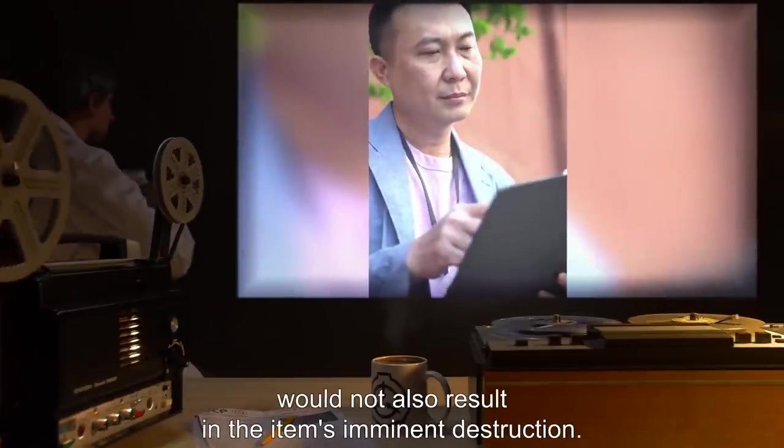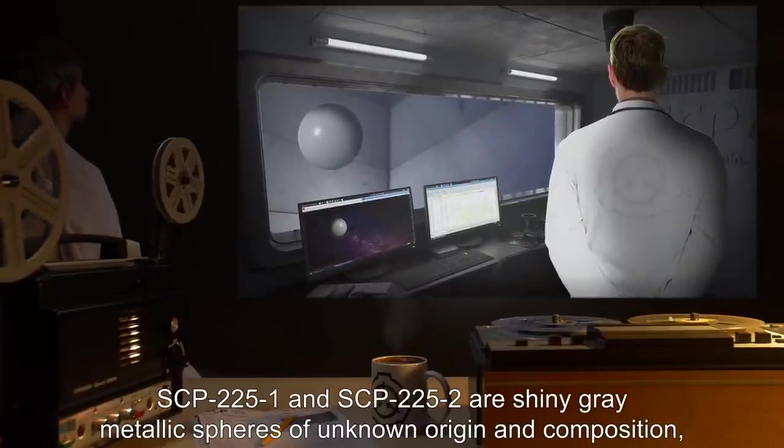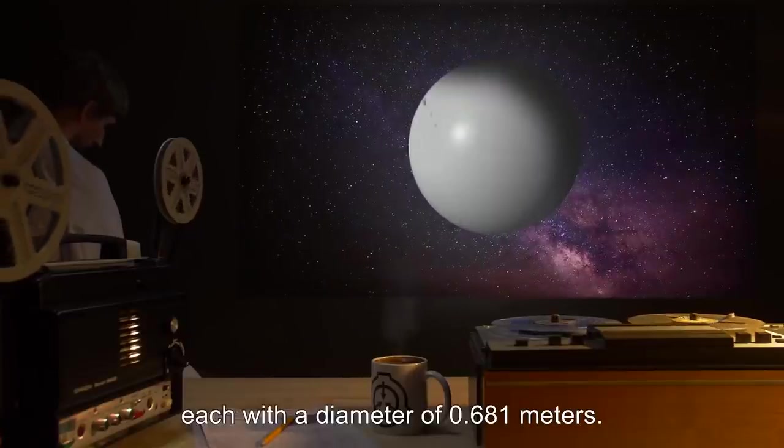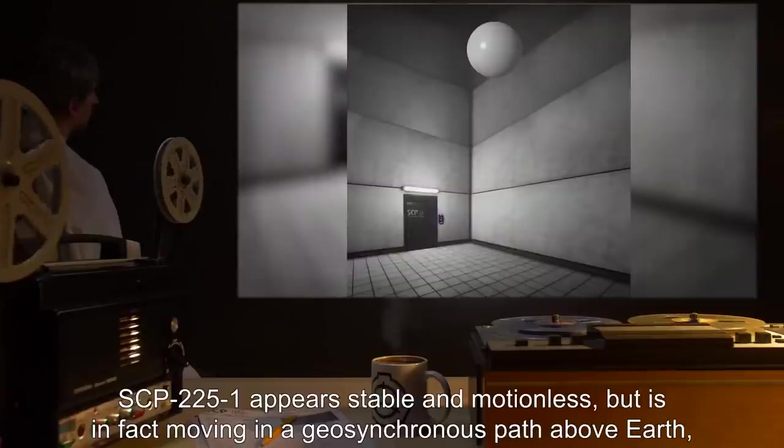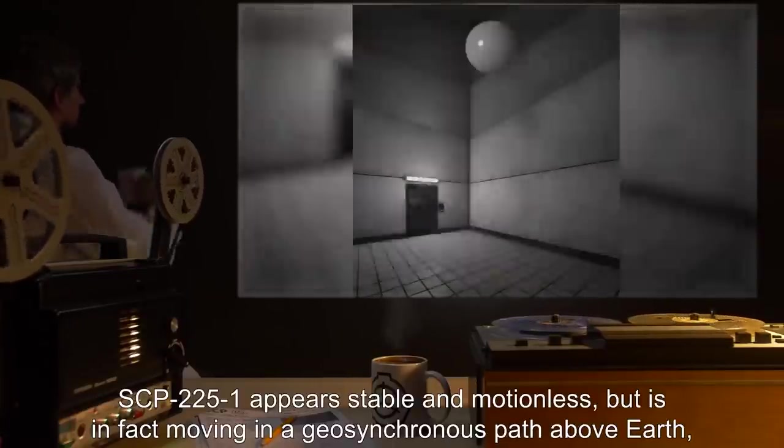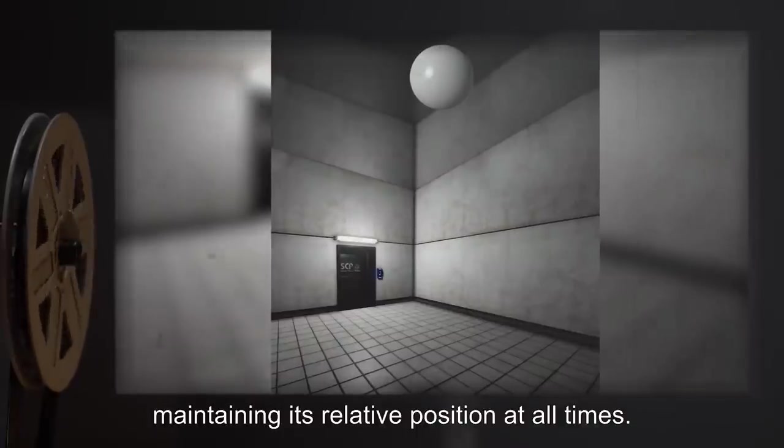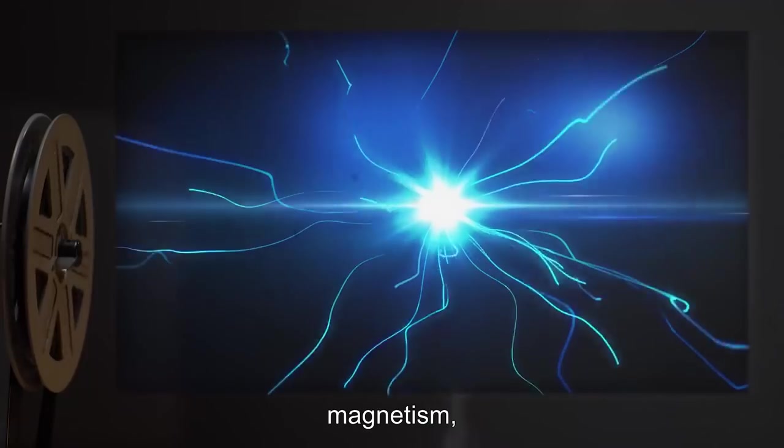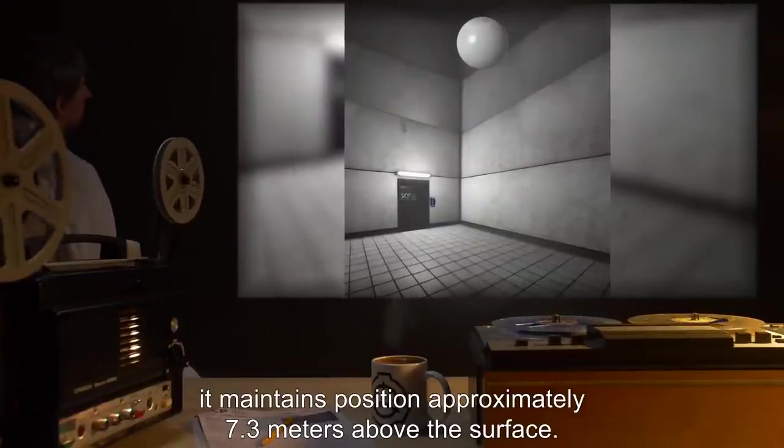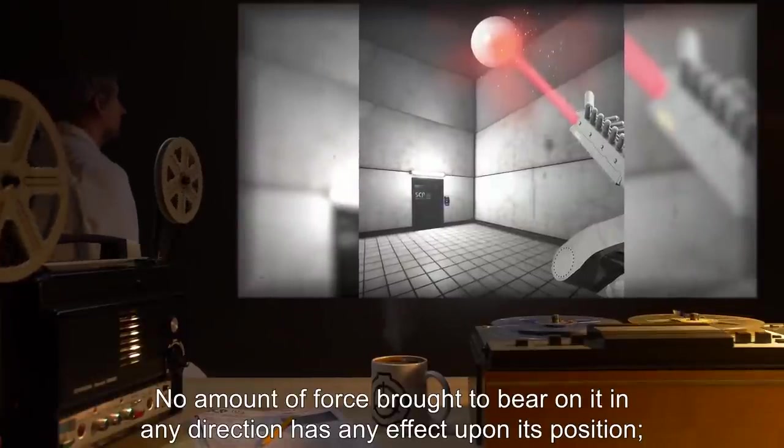Description: SCP-225-1 and SCP-225-2 are shiny gray metallic spheres of unknown origin and composition, each with a diameter of 0.681 meters. SCP-225-1 appears stable and motionless, but is in fact moving in a geosynchronous path above Earth at the exact speed of Earth's rotation, maintaining its relative position at all times. Gravity, magnetism, and all other forces tested have had no effect upon it. It maintains position approximately 7.3 meters above the surface. No amount of force brought to bear on it in any direction has any effect upon its position.